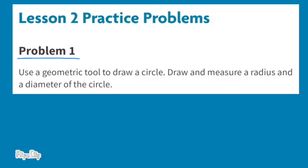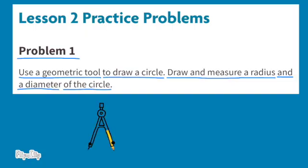Problem number one. Use a geometric tool to draw a circle. Draw and measure a radius and a diameter of the circle. One geometric tool that you could use is called a compass, and you can use this compass to draw a circle. Imagine that this was a perfect circle. This would be the diameter, and let's say it measures 2 inches. Since the diameter measures 2 inches, that would mean that the radius would measure 1 inch.